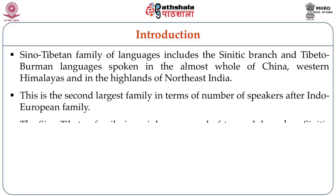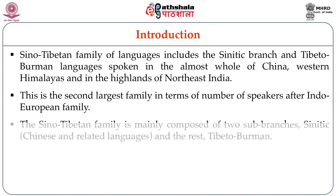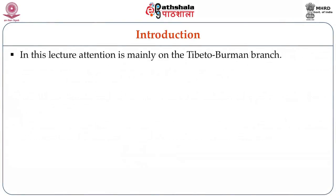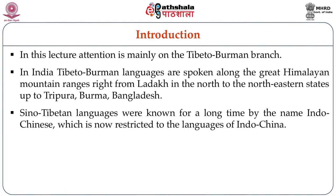This is the second largest family in terms of the number of speakers after the Indo-European family. The Sino-Tibetan family is mainly composed of two sub-branches: Sinitic, which includes Chinese and related languages, and the rest Tibeto-Burman. In this lecture, attention is mainly given to the Tibeto-Burman branch. In India, Tibeto-Burman languages are spoken along the Great Himalayan mountain ranges, right from Ladakh in the north to the northeastern states up to Tripura, Burma and Bangladesh.